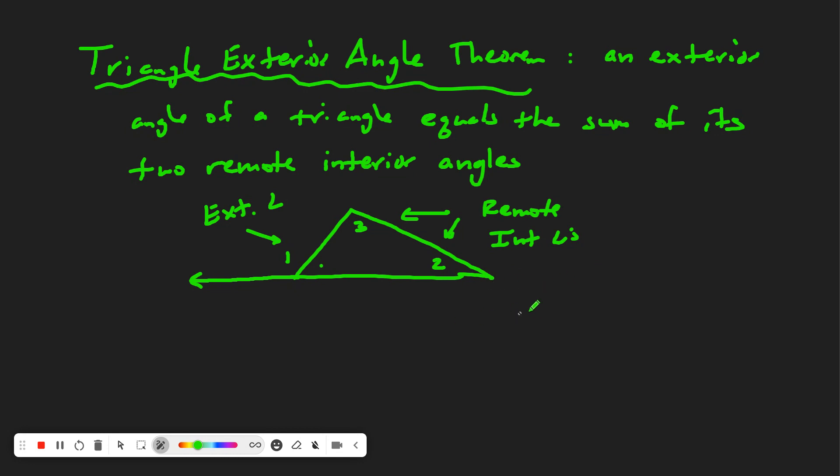By this theorem, we should know that the measure of Angle 1, the exterior angle, is equal to the sum of the two remote interior angles. That would be the measure of Angle 2 plus the measure of Angle 3.